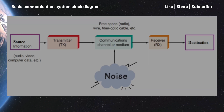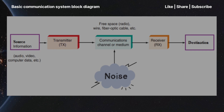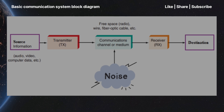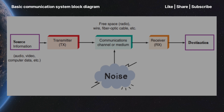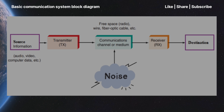The basic block diagram of a communication system consists of 6 essential blocks: Information Source, Transmitter, Channel, Noise, Receiver, and Destination. Let's go through each one step by step.